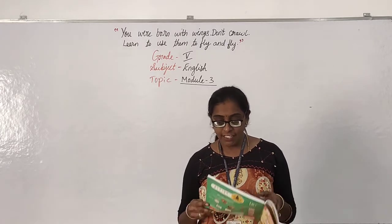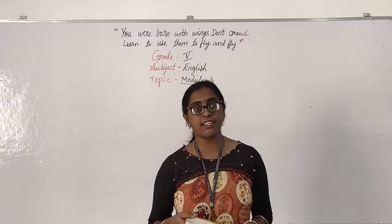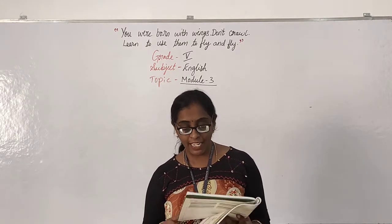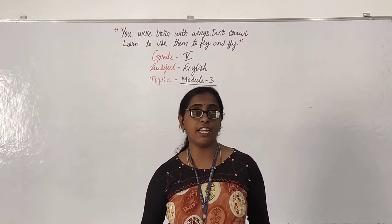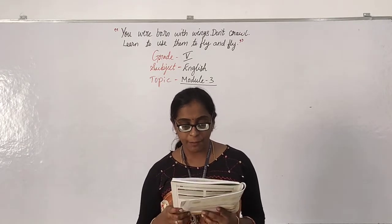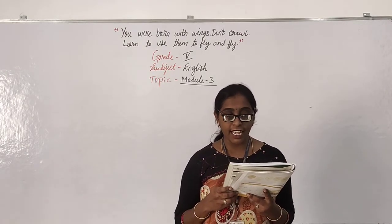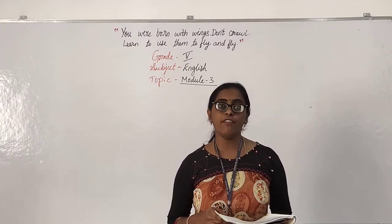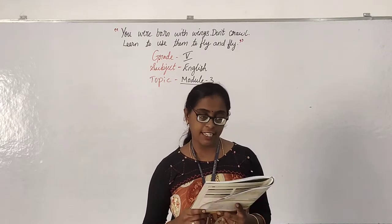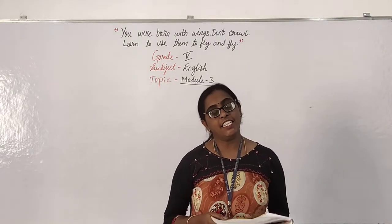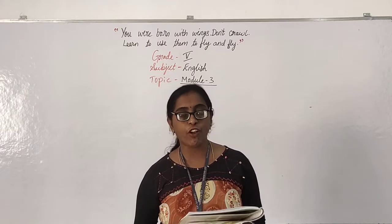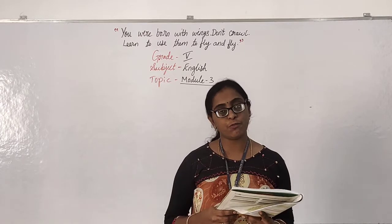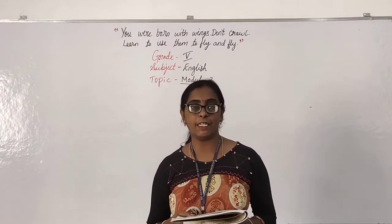Then we also learned about words ending with Y — we remove Y and add IES. For words ending with X, S, SS, CH, SH, we use ES. For example: taxes, buffalo/buffalos, bus/buses, church/churches, bush/bushes, kiss/kisses.